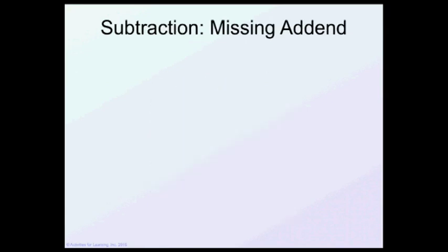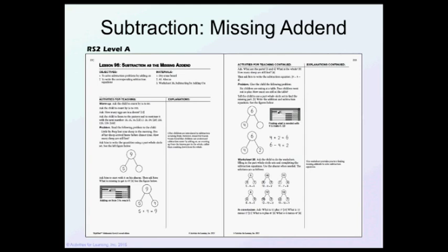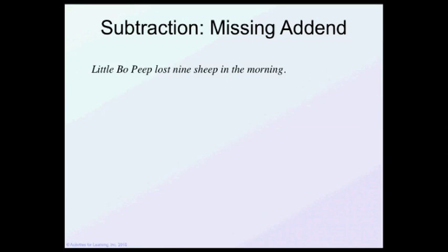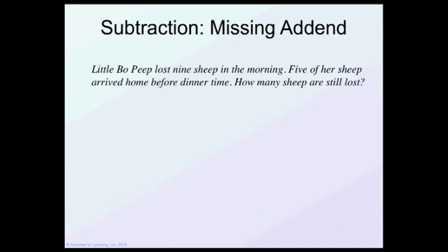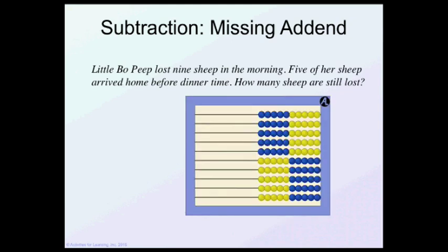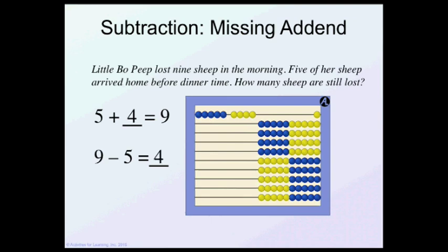Let's do some subtraction with the missing addend. This is from Level A, lesson 96. We've got a story problem. Little Bo Peep lost 9 sheep in the morning. 5 of her sheep came home before dinner. How many sheep are still lost? Using the abacus, we have 5 that came home. There's 9 altogether. So what do I need to make 9? How many did I need to go from 5 to 9? I needed 4 more, so 4 are still lost. I can write it as 5 plus what equals 9? The answer is 4. Of course, I can also write it as 9 minus 5 is 4.